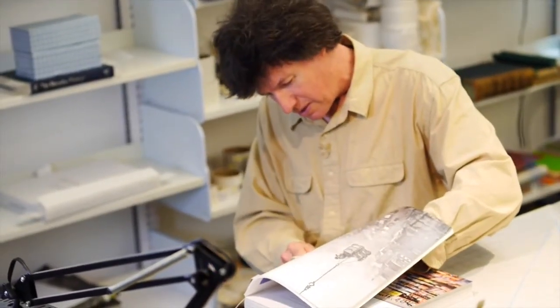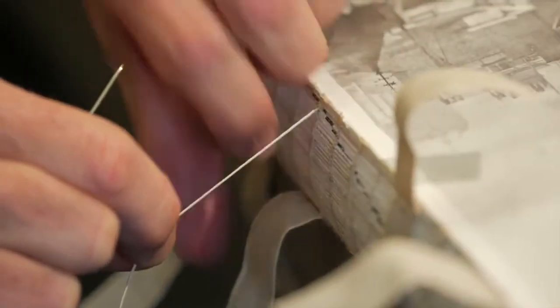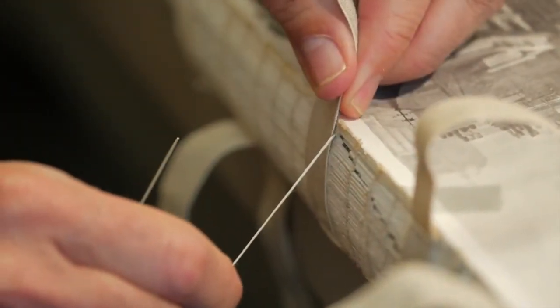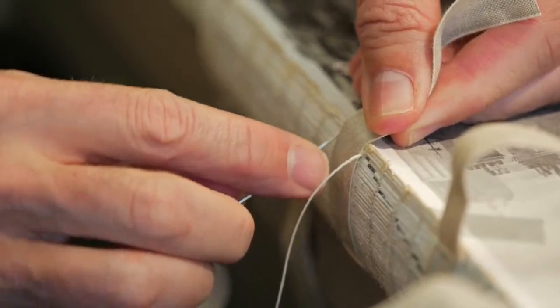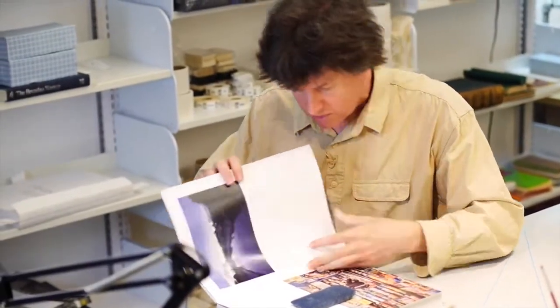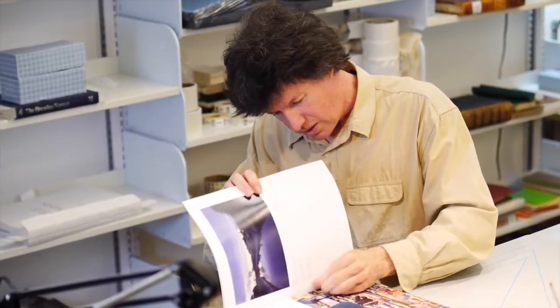It happens all the time that a text block falls away from its case and it's just because books are made so poorly anymore as opposed to the good old days when they were made much better.